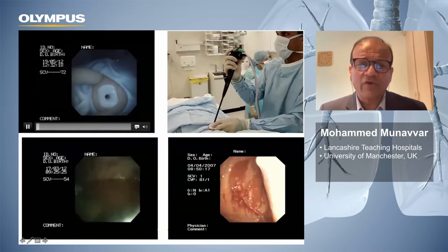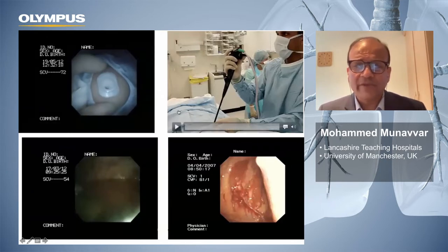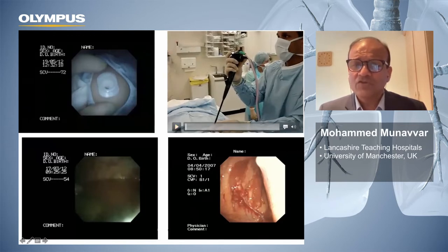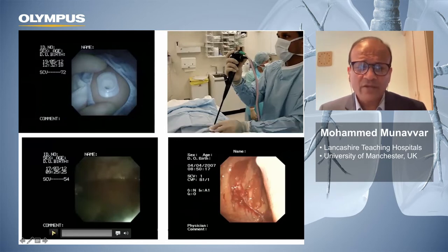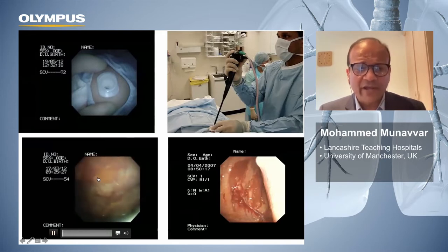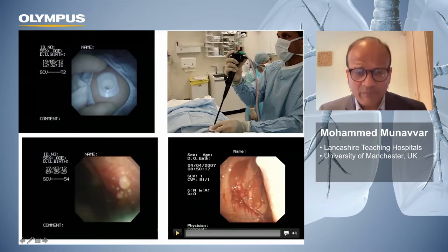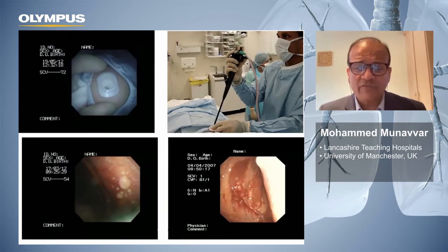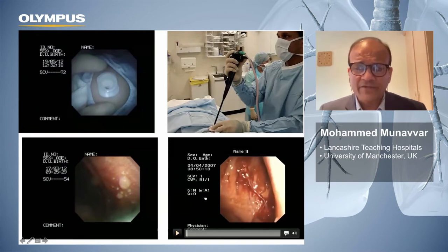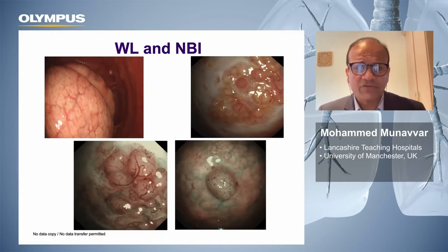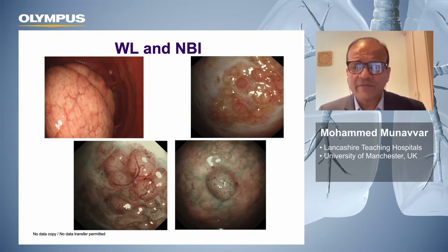Once you have access to the pleural cavity through the cannula, you introduce the thoracoscope — operated just like a bronchoscope — and suction fluid as you go in. You then look into the pleural cavity and can see a variety of changes. In this patient you can see multiple nodules, as seen typically in tuberculous pleural effusion or metastatic disease of the pleura. In some cases you also use narrow band imaging to get better quality images alongside standard white-light thoracoscopy.